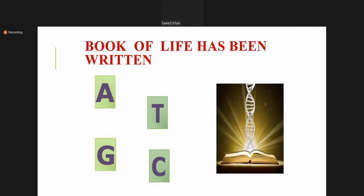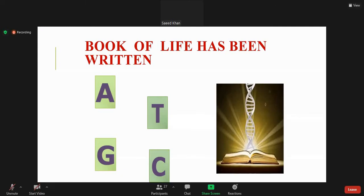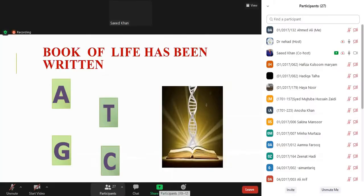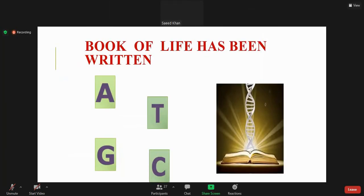Just as we have 26 alphabets in English literature, and then you have different chapters, different books, and different literature — you have the whole literature of English with those letters. Similarly, we have these four letters in biology, and with understanding the language, we can know the phenomena.